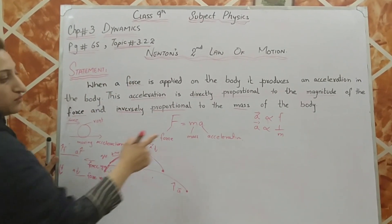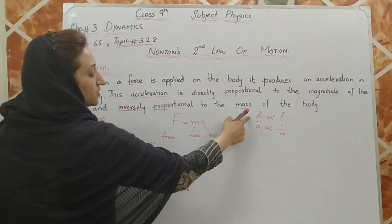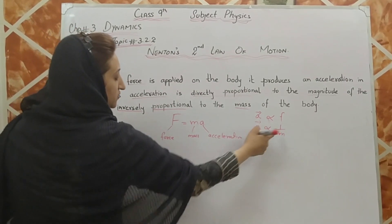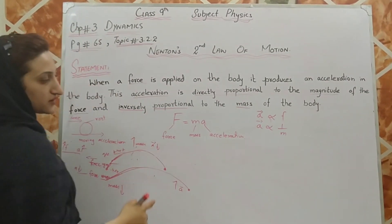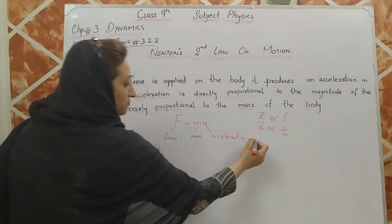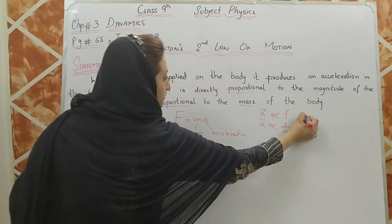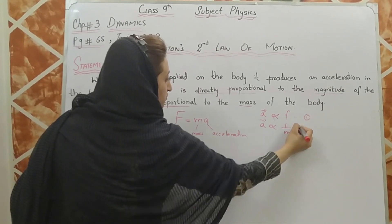From this example I can write the equation: acceleration is inversely proportional to the mass of the body. Now combining both relations — acceleration is directly proportional to force and inversely proportional to mass — I combine them into one equation.